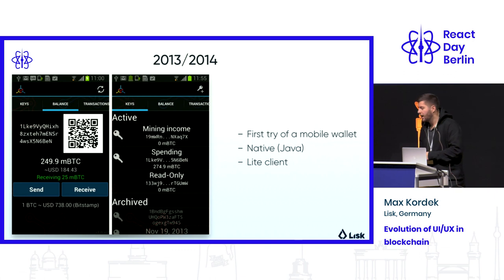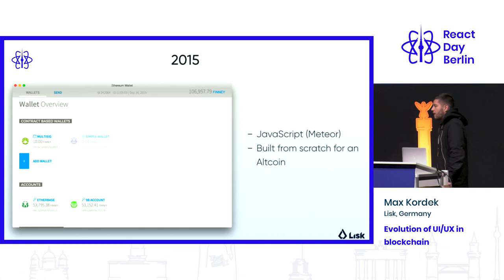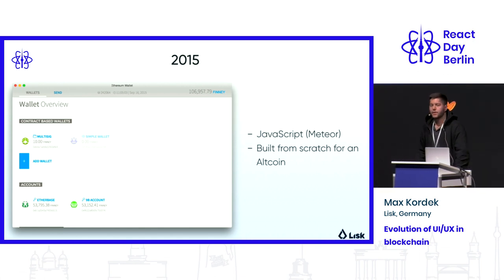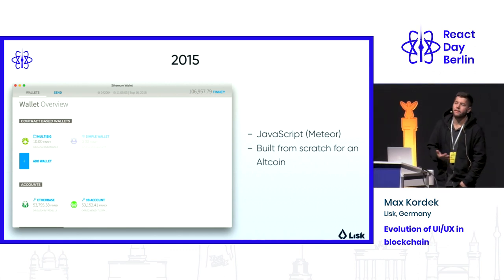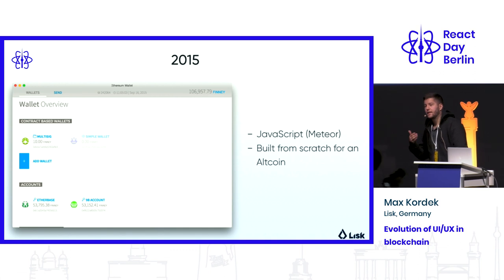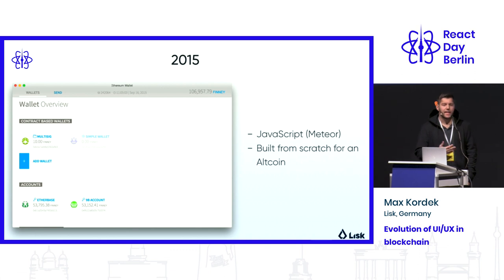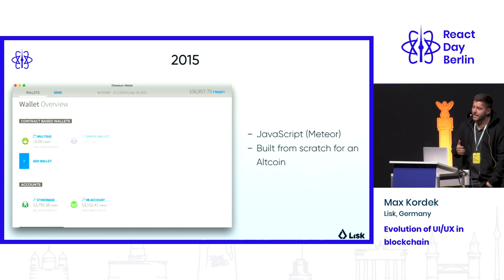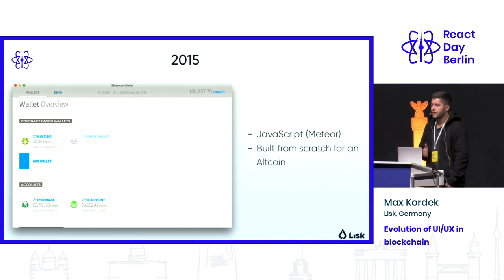Then came the famous Ethereum wallet in 2015, one of the first using JavaScript — unfortunately Meteor at that time. This was a wallet not developed for Bitcoin but for an altcoin, meaning other cryptocurrencies started being developed independently from the Bitcoin community. Independent teams began trying to innovate the user experience, but as you can see, it was still super minimal with just one goal in mind: transferring tokens.